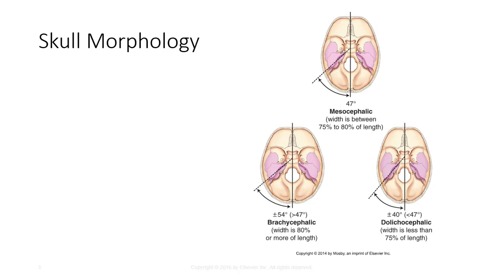When it comes to skull morphology, radiographic positioning guidelines are based on the mesocephalic skull size and shape. Adjustments to centering and central ray, and/or part angulation, may be required when working with patients with atypical skull shapes.